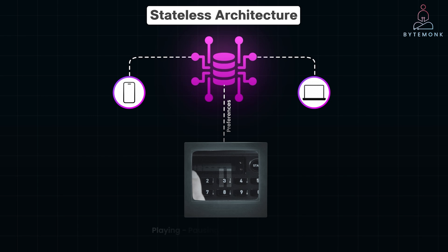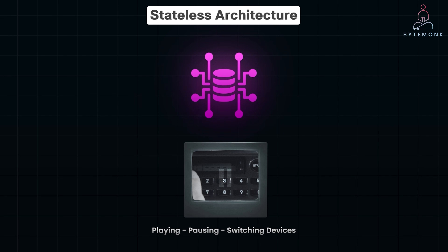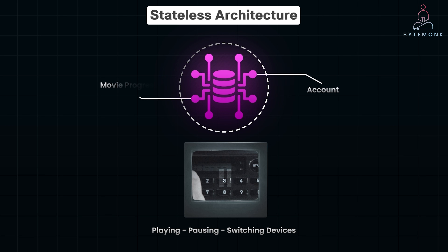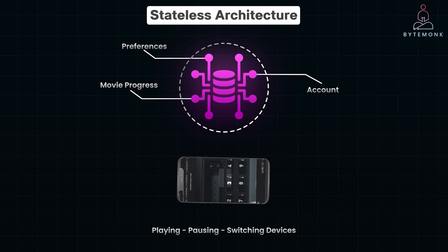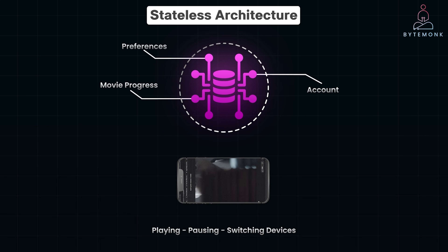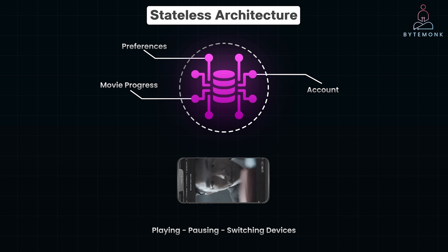Every request you make — like playing, pausing or switching devices — contains all the information the system needs to know, such as your account, movie progress, preferences, and so on. The system retrieves this from a shared database so any device can continue where the last one left off without needing to remember anything from the previous session.